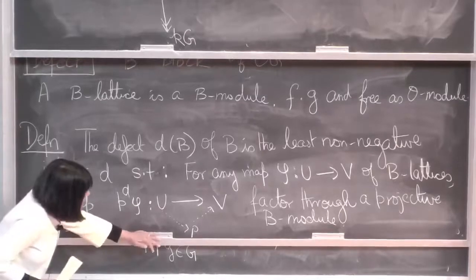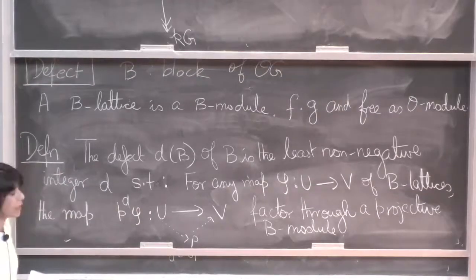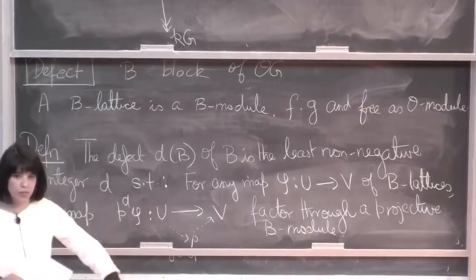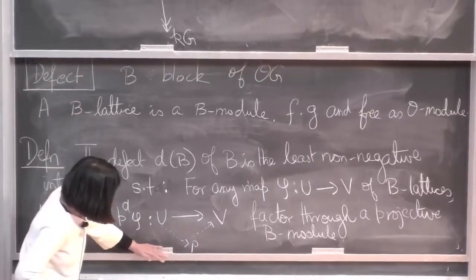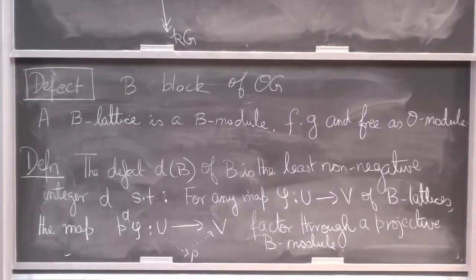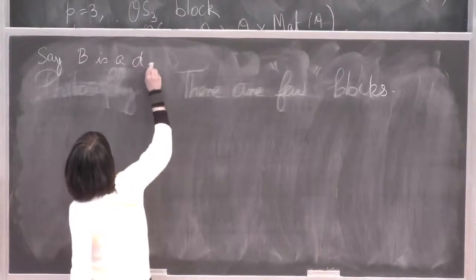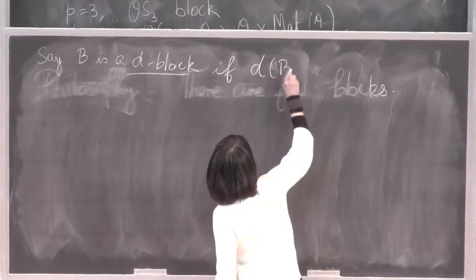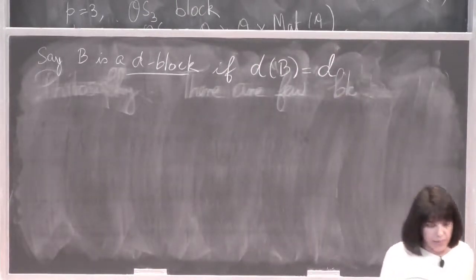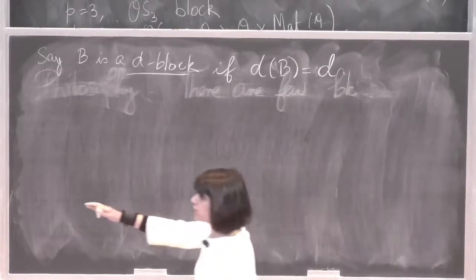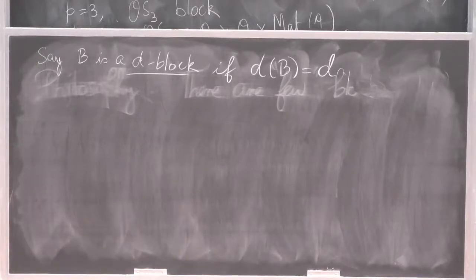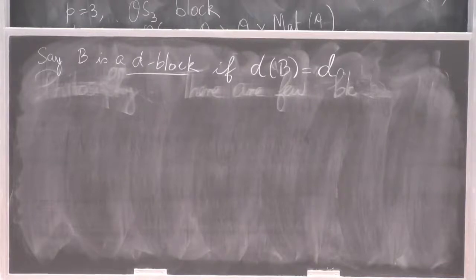There are many definitions of defect. I've chosen this one because I wanted to do it without introducing defect groups in this first lecture. It's easy to see that if you have two blocks and they are Morita equivalent, then they have the same defect. We say B is a D-block if D(B) equals D. It's not even immediately clear that such an integer exists, but it does — starting with any O-algebra that is an O-order whose extension to capital K is semisimple, the defect is well-defined and finite.